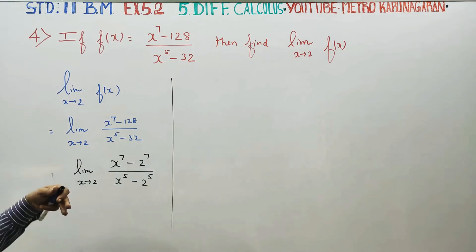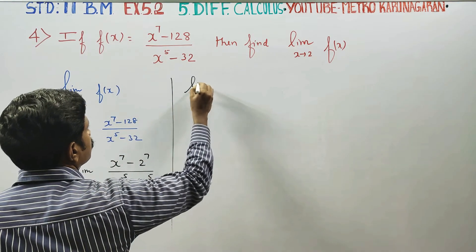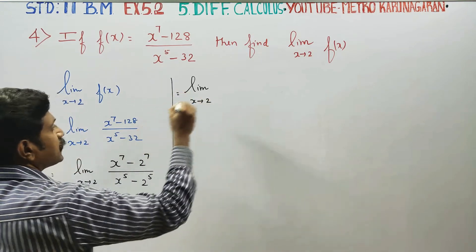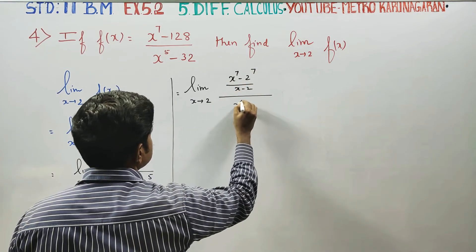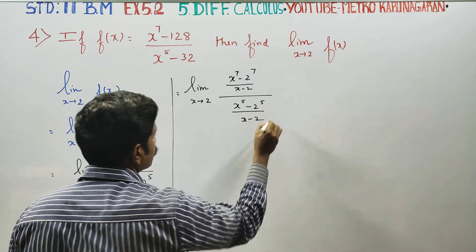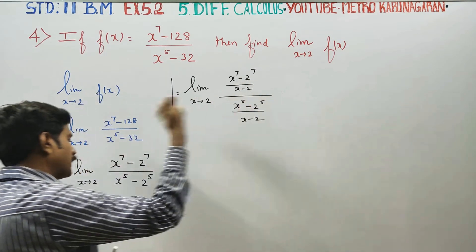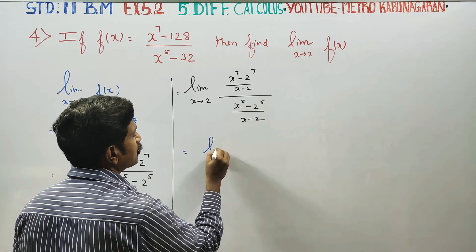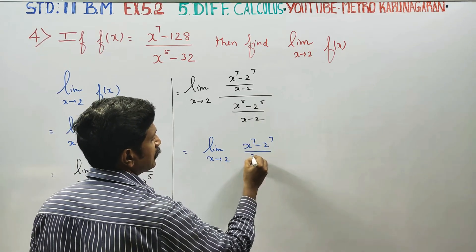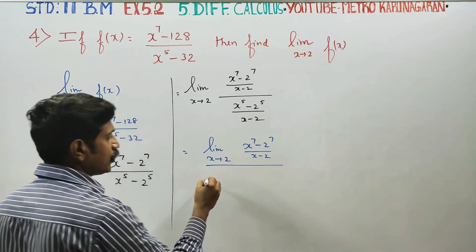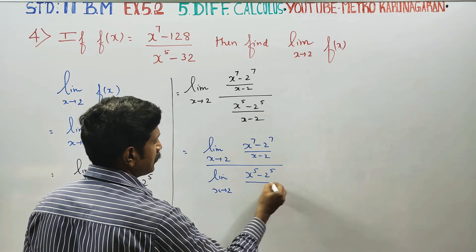In the next stage, we divide both numerator and denominator by x minus 2. One fraction's numerator and denominator share one common factor. That is why we write x power 7 minus 2 power 7, divided by x minus 2, over x power 5 minus 2 power 5, divided by x minus 2. This gives us limit x tends to 2 of x power 7 minus 2 power 7 over x minus 2, divided by limit x tends to 2 of x power 5 minus 2 power 5 over x minus 2.